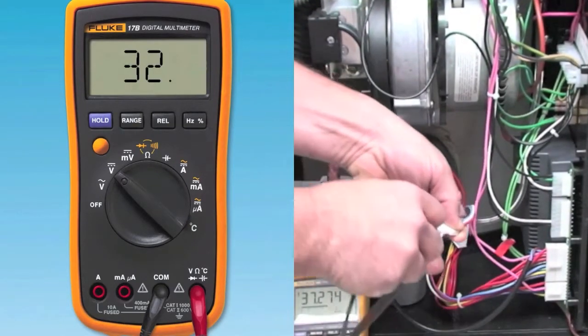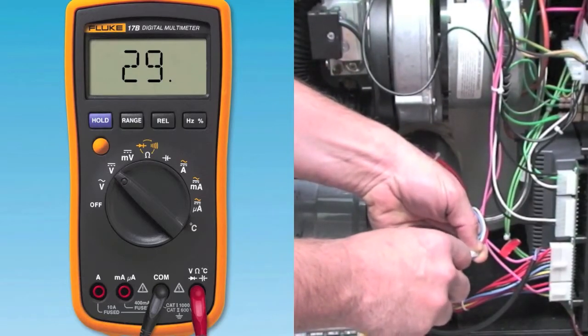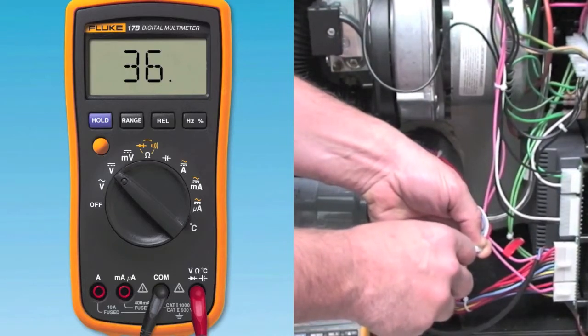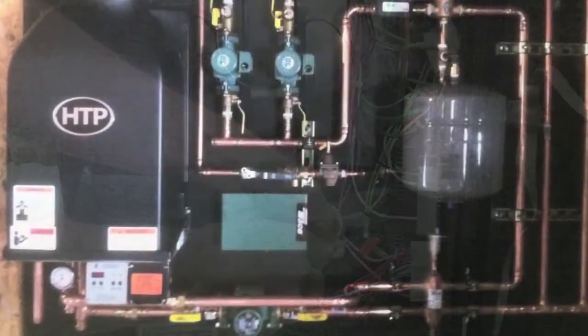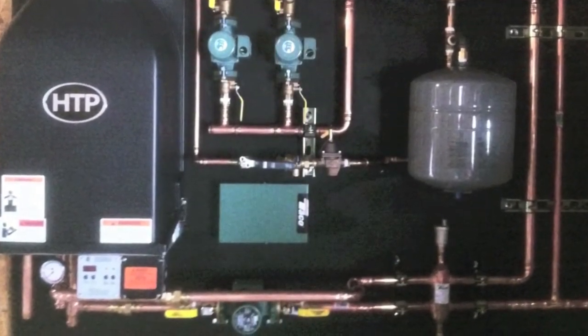If it is lower than 24 volts, check for excessive external loads connected to the appliance. Check the wiring connections into the appliance which could draw down the 24 volt side of the control transformer. If it is still below 24 volts, replace the control board of the appliance.